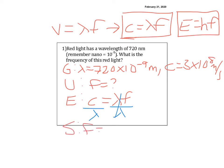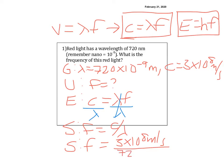Dividing both sides by lambda, I get F equals C over lambda. I plug in F equals 3 times 10 to the 8th divided by 720 times 10 to the negative 9th meters. If you have a scientific calculator, the best way is to type 3 EE 8 divided by 720 EE negative 9. You can use the EE or EXP button — that's the easiest method.